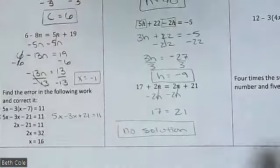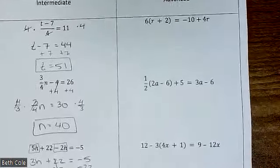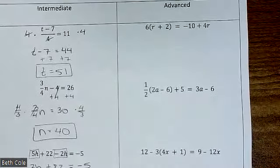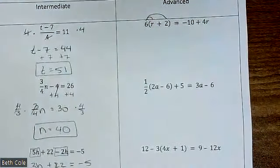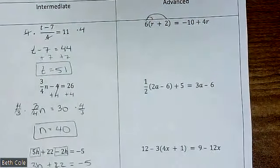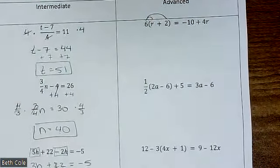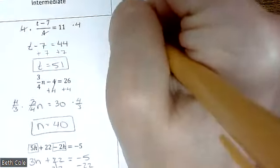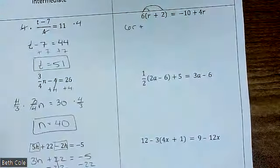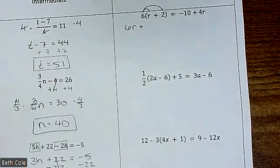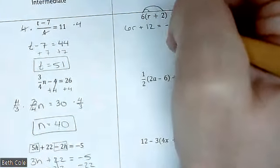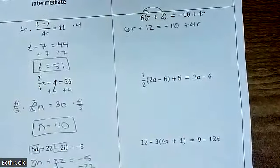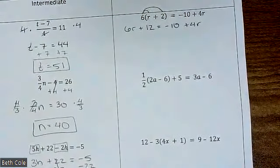Okay, now we're on to the advanced ones — these ones are going to have parentheses, and that involves distributing. Right here, distribute the 6. You're going to have to write a little bit small — I wanted this to fit on one piece of paper. That'll give you 6r plus — when you distribute the 6 — 12. Good. Equals, and then just copy the rest of that.